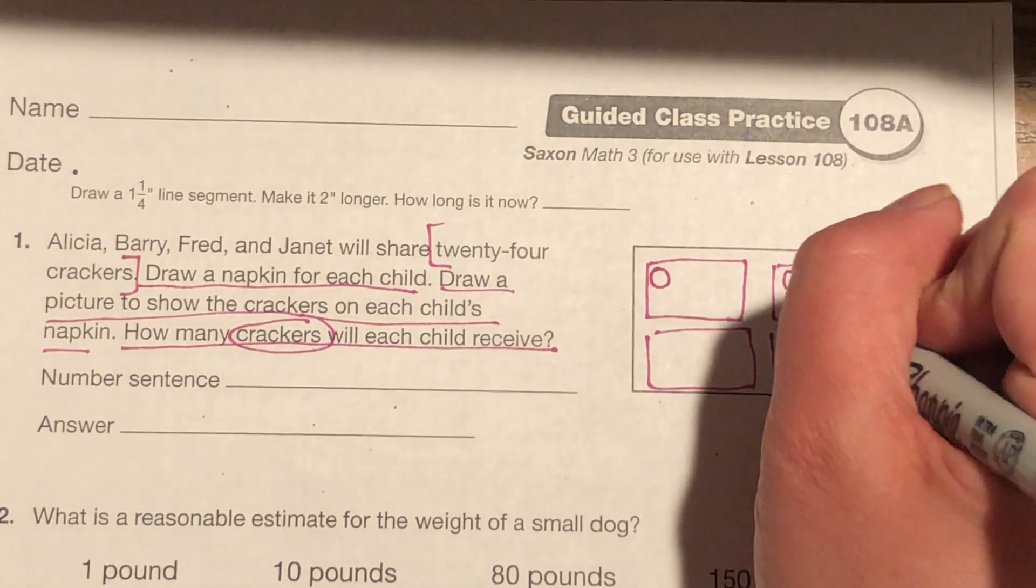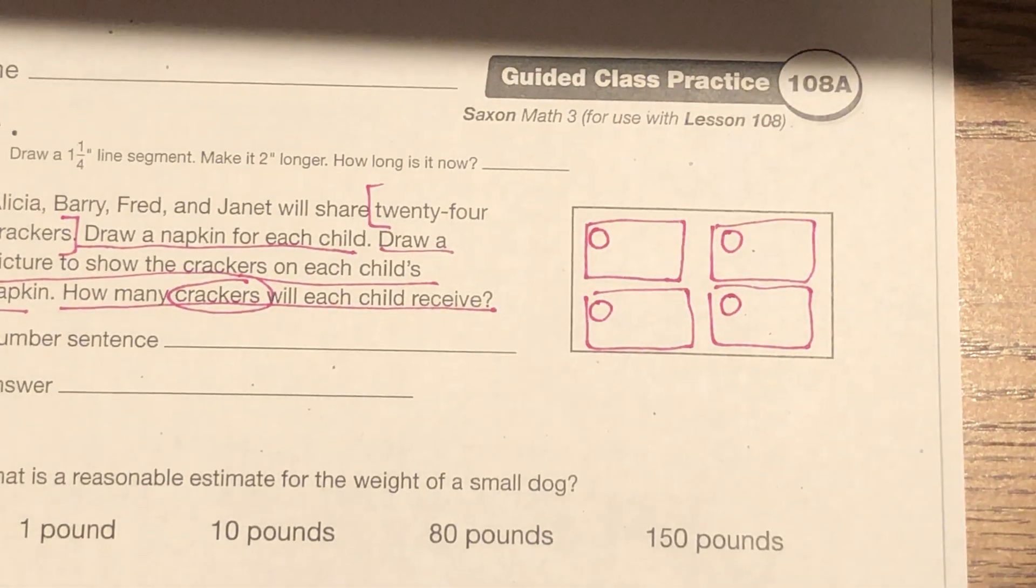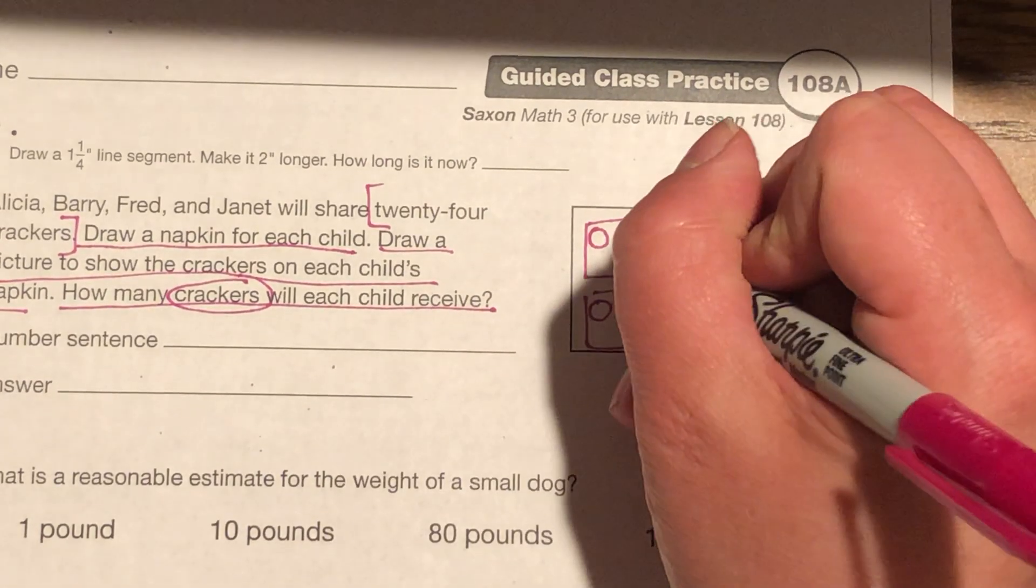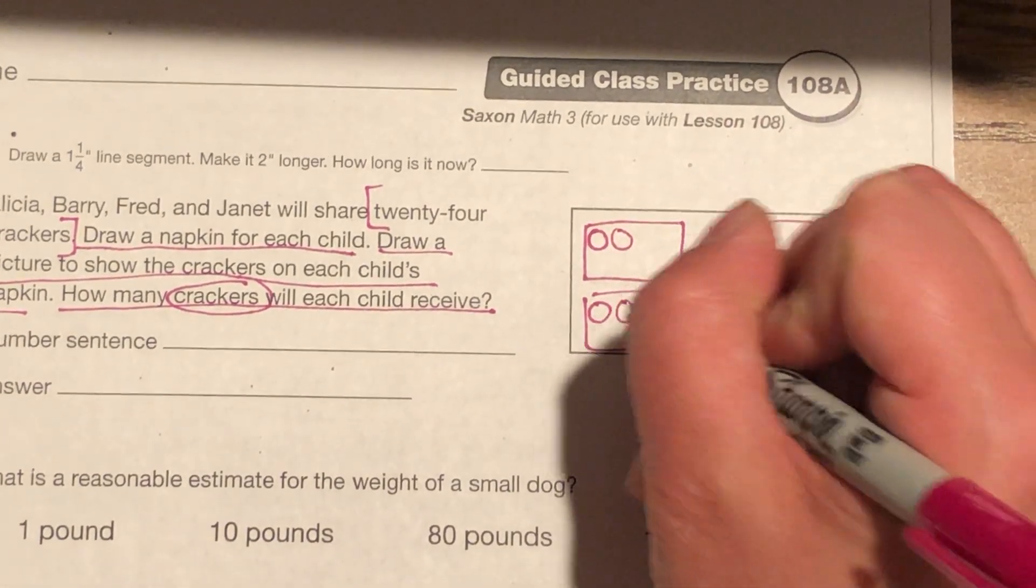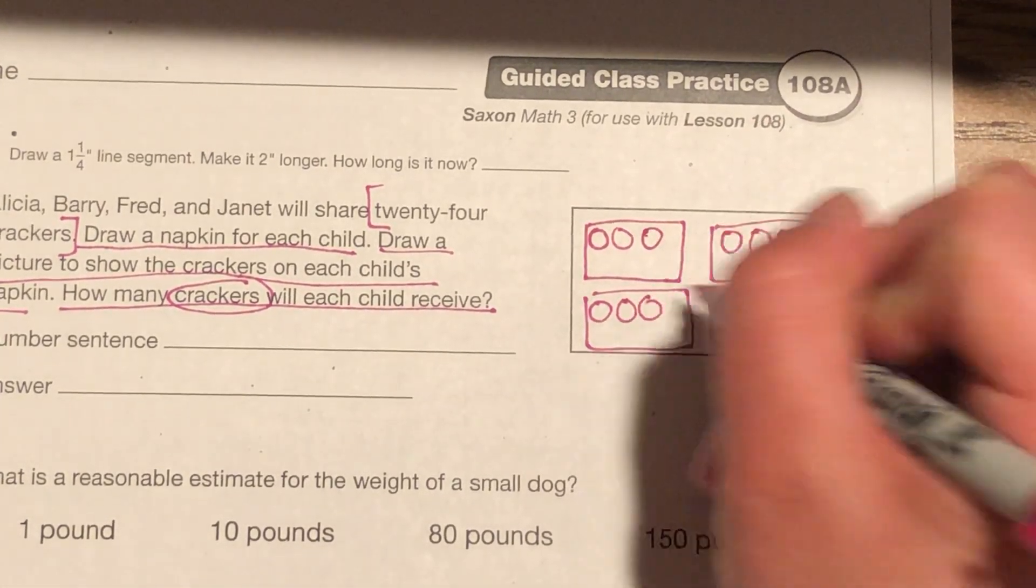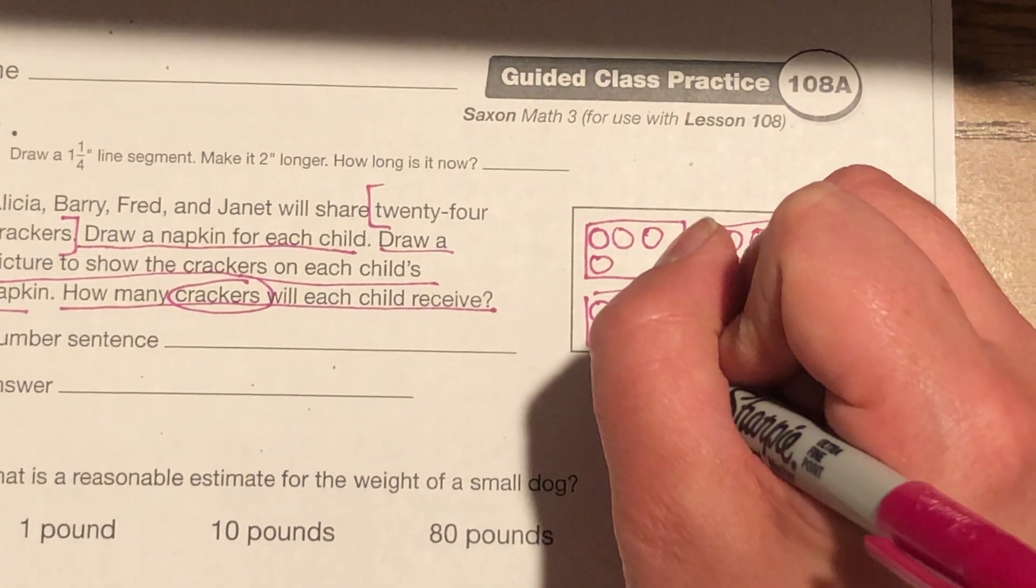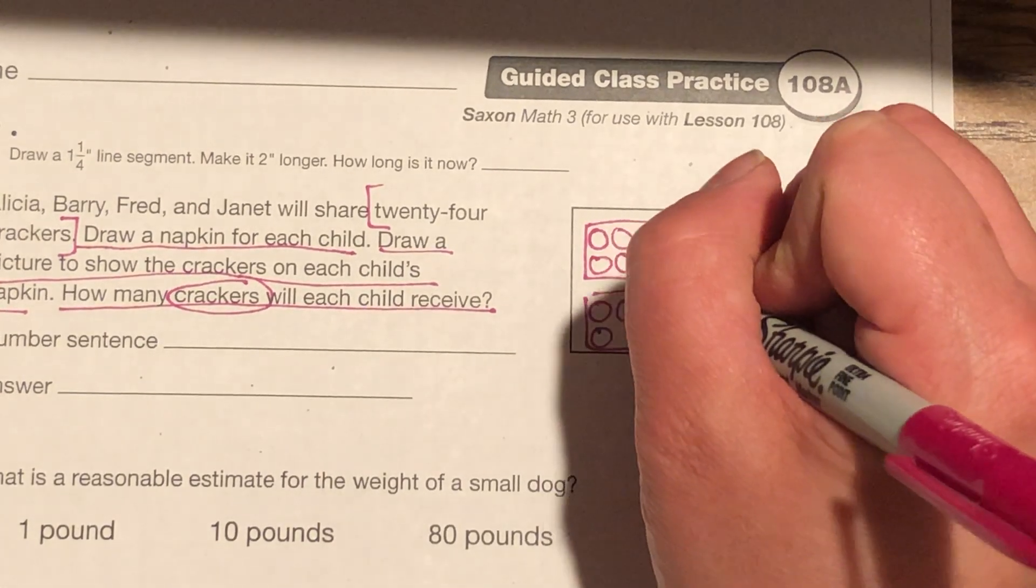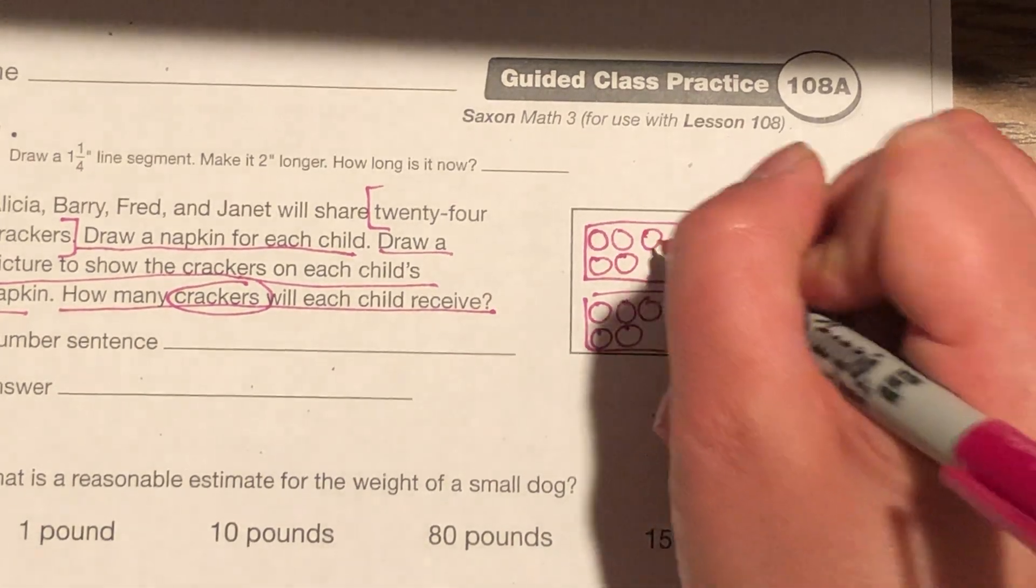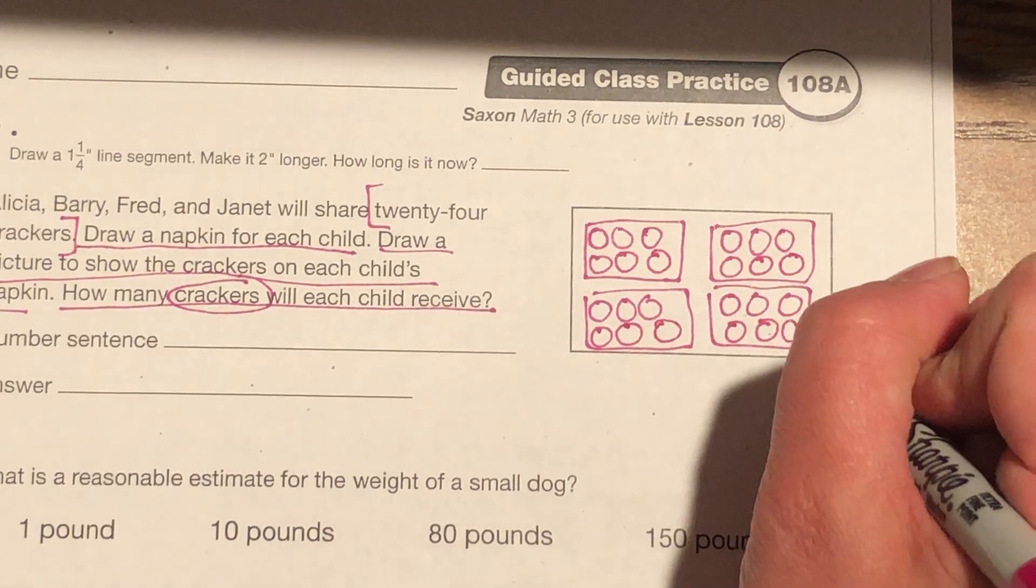So I'm going to draw four napkins. There are four children. The next thing it tells me to do is draw a picture to show the crackers on each child's napkin. I have 24 crackers that I'm going to divide equally. So I'm going to draw that picture, and I'm going to count as I do it. So one, two, three, four. I'm going to go through, and I'm going to draw one on each napkin until I'm at that 24 mark. 5, 6, 7, 8, 9, 10, 11, 12, 13, 14, 15, 16, 17, 18, 19, 20, 21, 22, 23, 24.